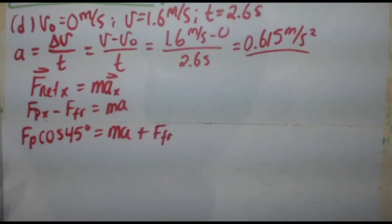The question says assume the same friction force. So we're going to use the answer we got in part B to be 60.8 Newtons. Okay, so FP cosine 45 equals MA plus F friction.